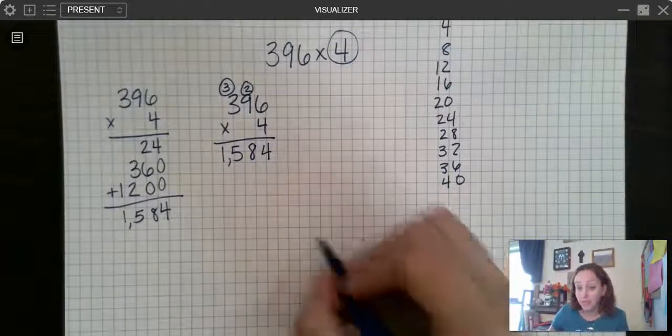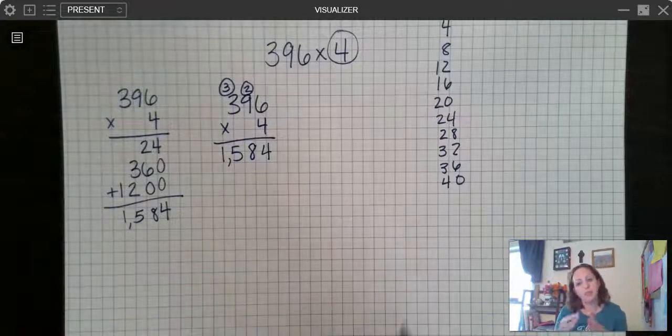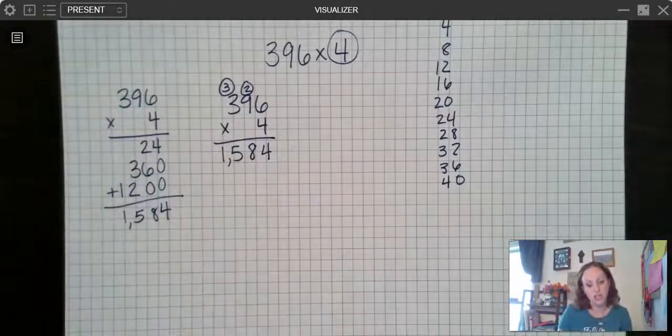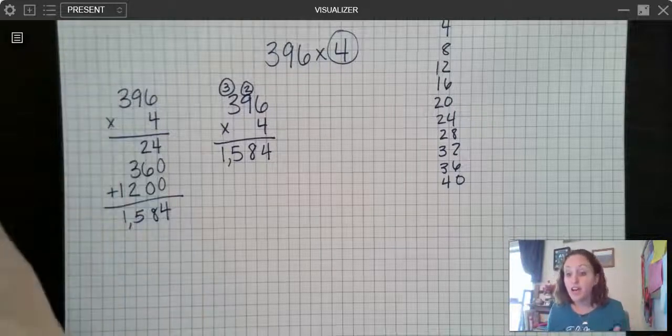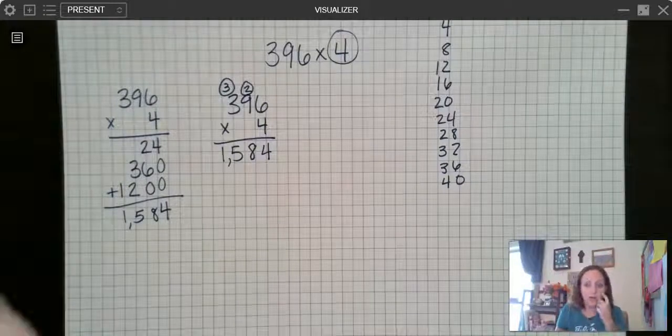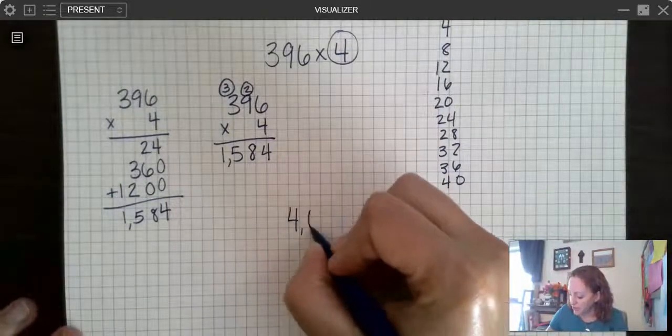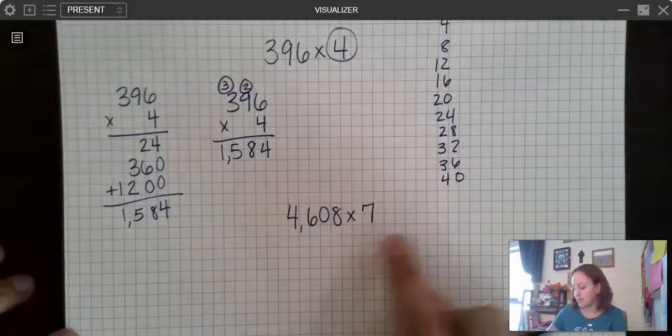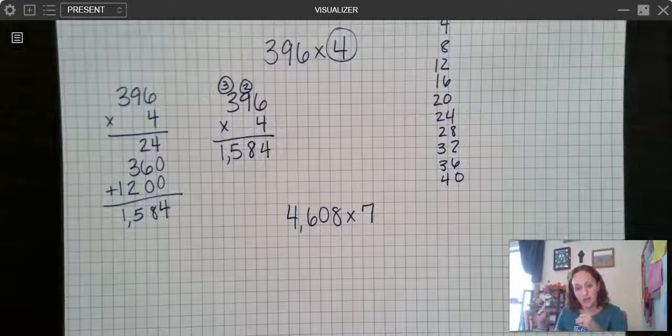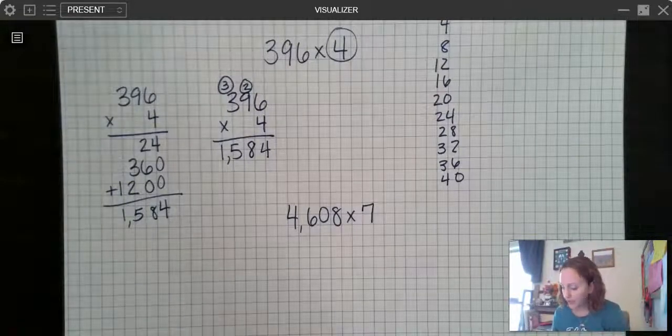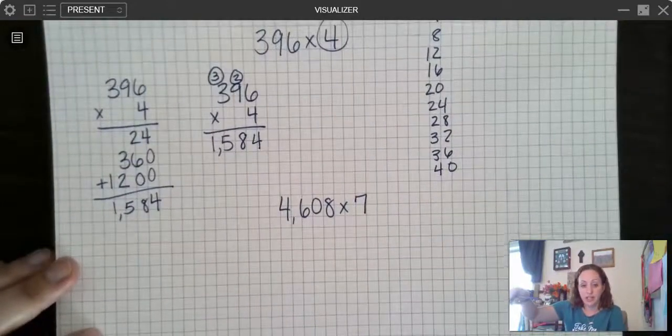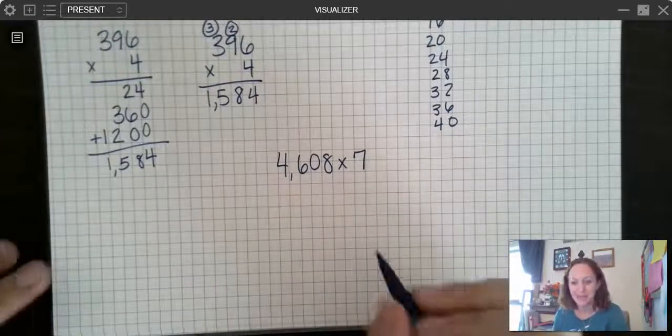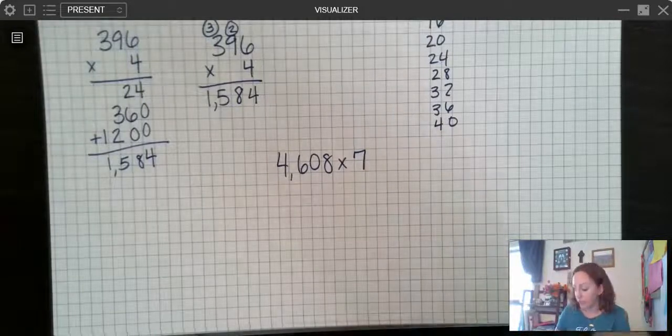Let's look at another one. This time we're going to do a four digit number times a one digit number. And I'm only going to do it with a standard algorithm just for the sake of time with this video. If you're preferring the partial product strategy or the distributive property area model strategy, that's fine. This is just showing you another way to multiply. So I have 4,608 times seven. Again, if I don't know my seven times tables, I could list them just like I did my fours starting with seven and I count up by groups of seven until I get to 70. It takes about 30 seconds to do that. So it's a really great strategy. If you don't have those memorized yet, that's a great strategy to use.